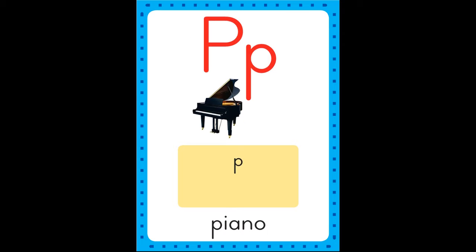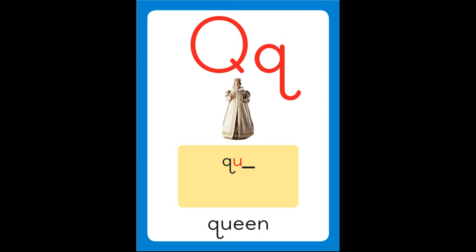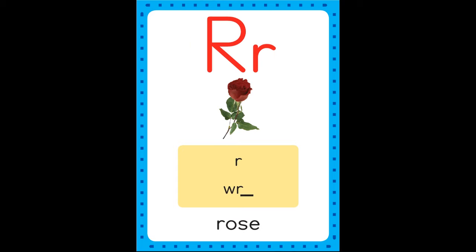P is for piano, p-p-piano. Q is for queen, q-q-queen. R is for rose, r-r-rose.